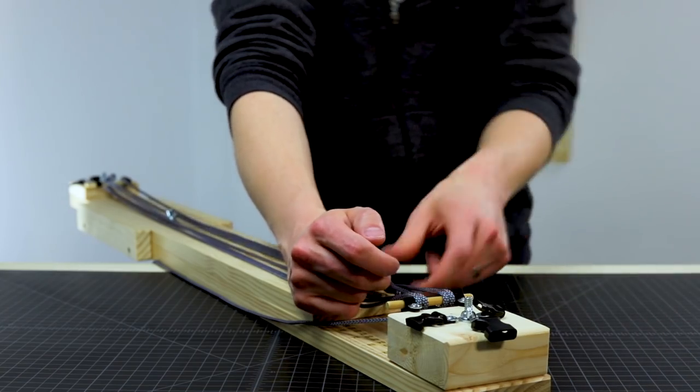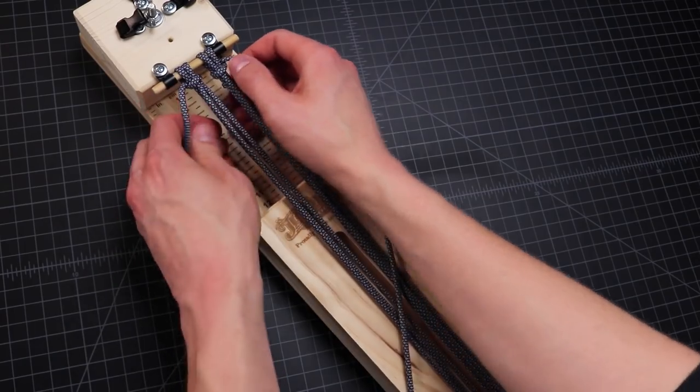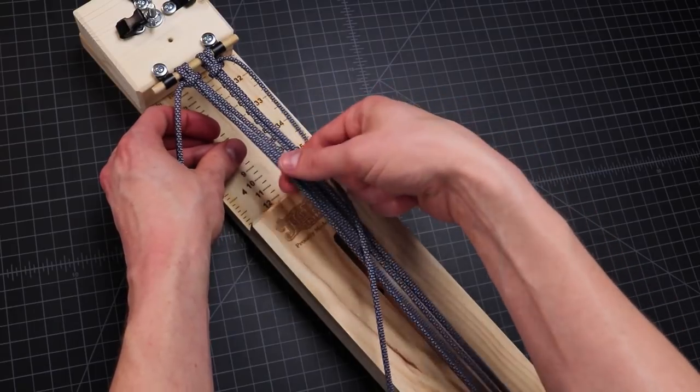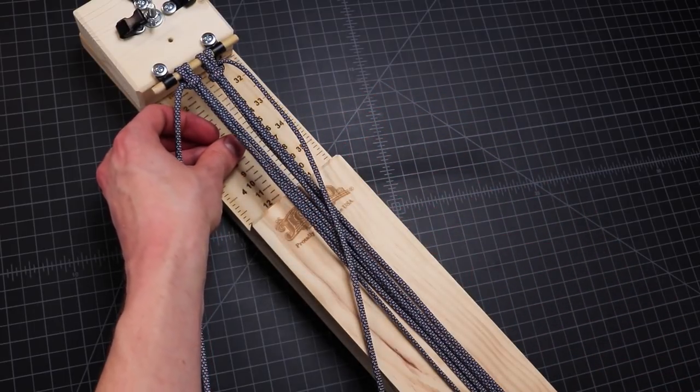And one last thing before we start our weave. Just make sure that your core strands are all tight. Mine are a little bit loose here. So I'm going to tighten that down before I get started.